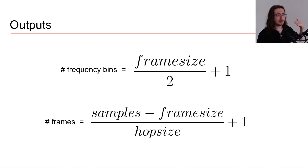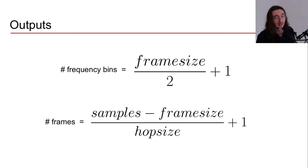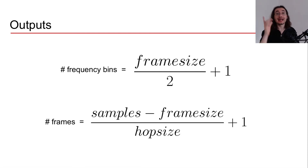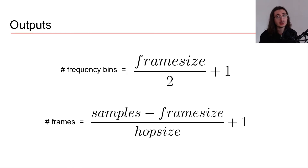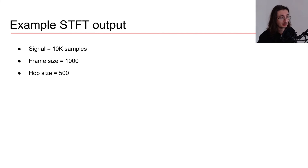For the number of frames, the formula is: total number of samples minus the frame size, divided by the hop size, plus one. I won't go into the derivation in detail here — I suggest playing around with this formula as an exercise to understand why it gives us the number of frames.